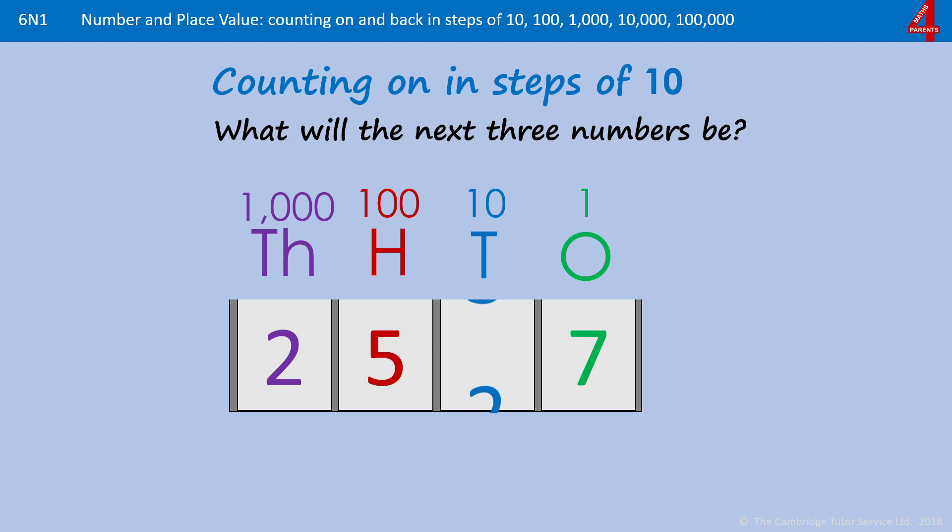And each time we add on 10, that tens column will just go up one each time until we get back to nine where we have 2597. Adding on another 10 again, that ten will go back to zero and the 500s will become 600s.